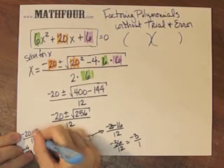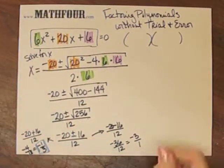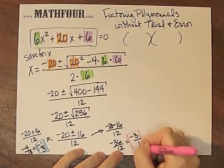Negative 20 plus 16 over 12. This is negative 4 over 12. Reducing all the way is negative 1 third. So there they are squished in the corners. So I have negative 1 third and negative 3 over 1. That's interesting, isn't it?